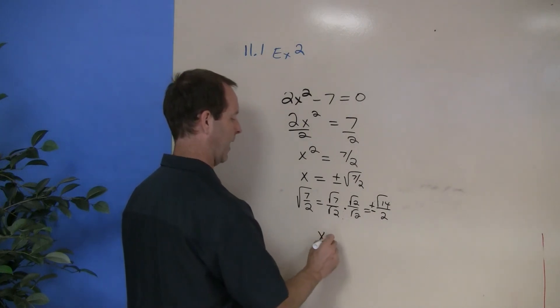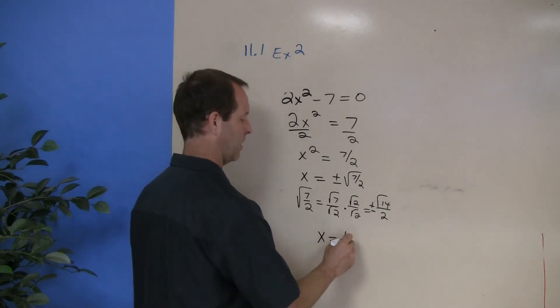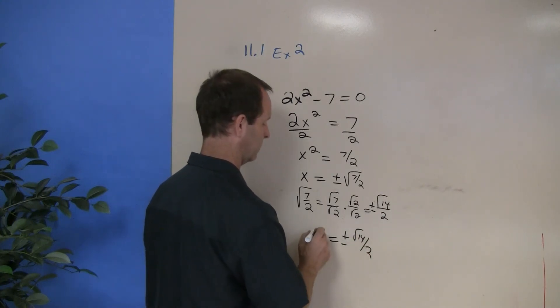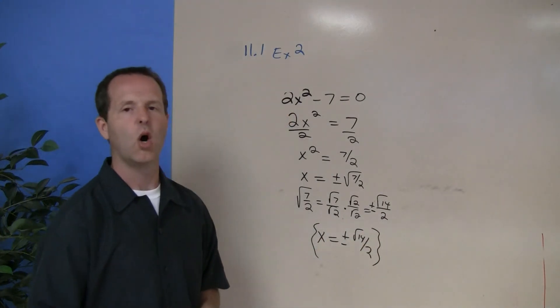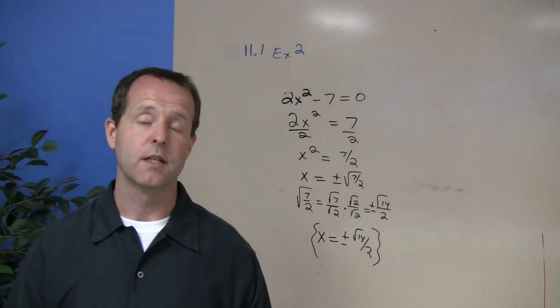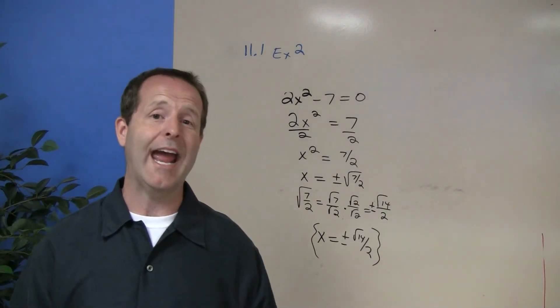The solutions of this problem are x such that x equals plus or minus the square root of 14 over 2. And it would be good to always check these solutions to make sure that we did do it accurately. Thank you again so much for coming.